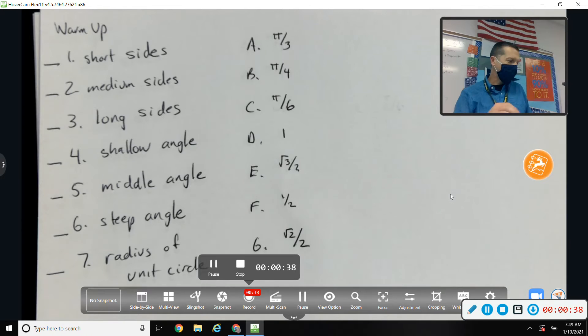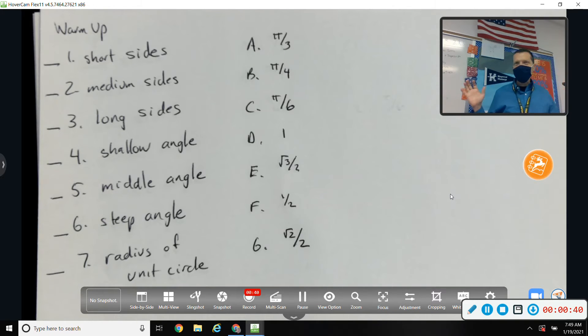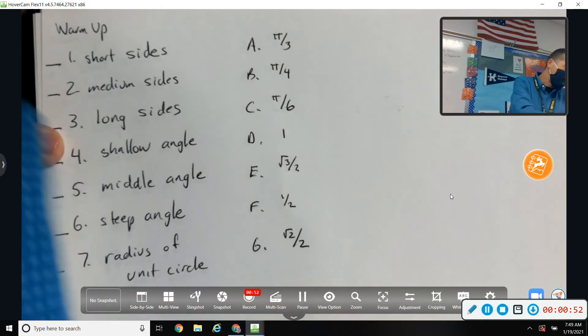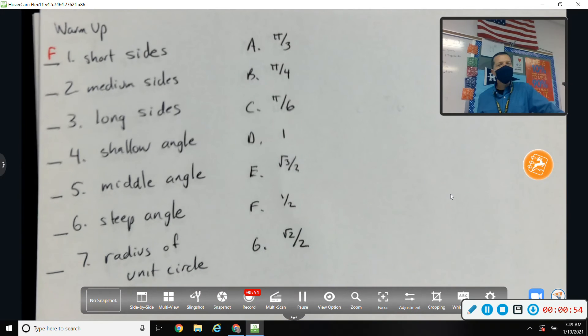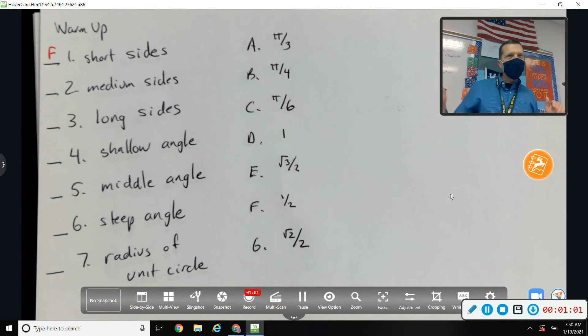So number one, the short sides. So every single short side of a triangle in the unit circle is how long? I thought this was easy. I need you to tell me. One half. One half. Again, every short side, if you draw a triangle and it has a short side, that short side is one half long. You've got to be careful about whether it's positive or negative. Positive or negative, but they're all one half.